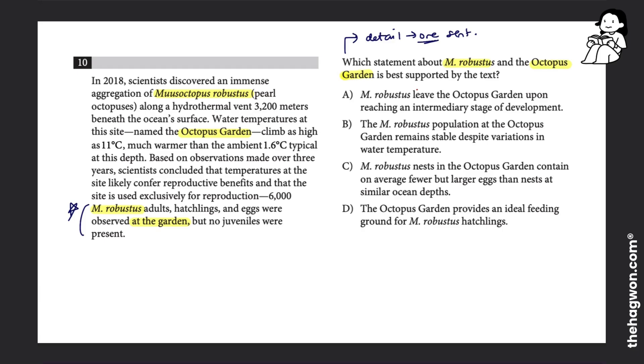And this sentence that I'm looking at says that M. Robustus adults, hatchlings, and eggs were observed at the garden, but no juveniles were present. So juveniles don't live at the garden, just babies and adults.